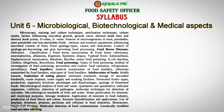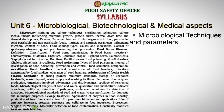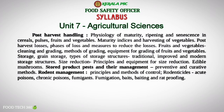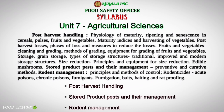Unit 6 covers Microbiological, Biotechnological and Medical Aspects. Unit 7, Agricultural Science, includes sub-topics such as post-harvest technology, stored products pests and their management, rodent management, and related topics.